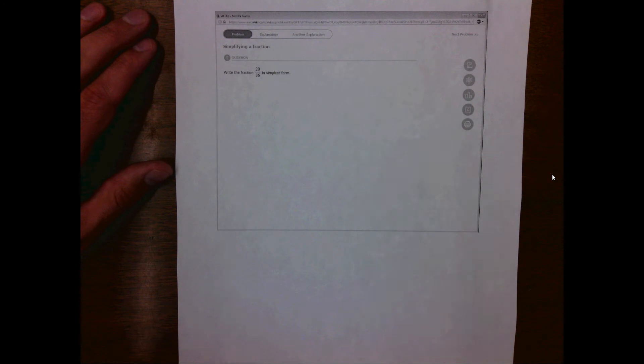In this question, we're asked to simplify the fraction 20 divided by 36. To do this, we need to find a common denominator. In this case, a common denominator between 20 and 36 is 4.